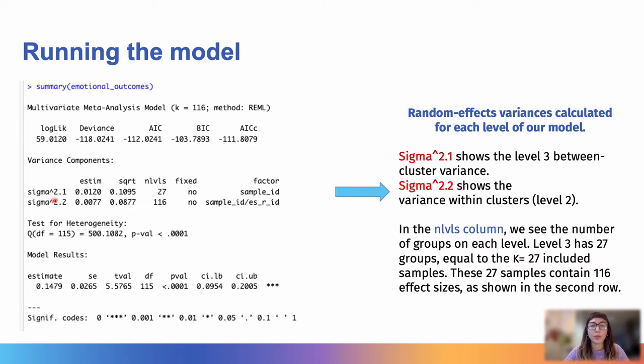So, what is important to note here is this part where the random effects variances are calculated for each level of our model. So, the sigma squared 1 shows the level 3 between cluster variance, and the sigma squared 2 shows the variance within clusters, so level 2.